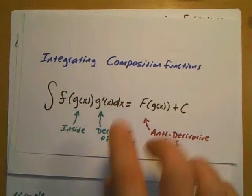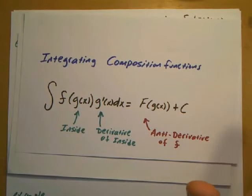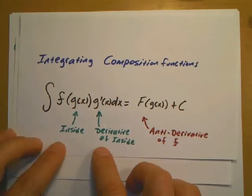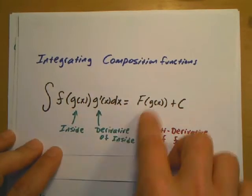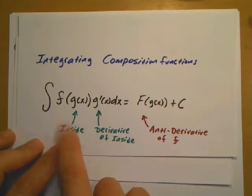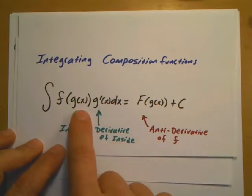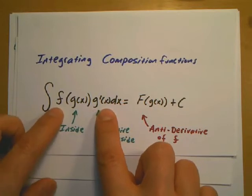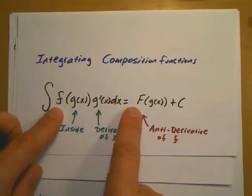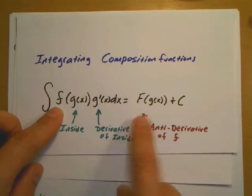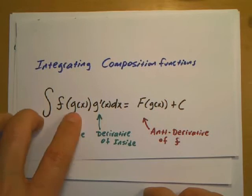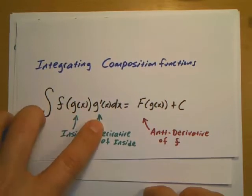What we'll be dealing with is a composition of functions — basically a function inside of a function. We're going to think of it as the chain rule for anti-derivatives or the chain rule for integrating. The basic pattern is that we consider g to be the inside, and the derivative of the inside has to also be in the integral. We're looking for the anti-derivative of f, which we call capital F. It's really just matching the pattern of the inside and the derivative of the inside.